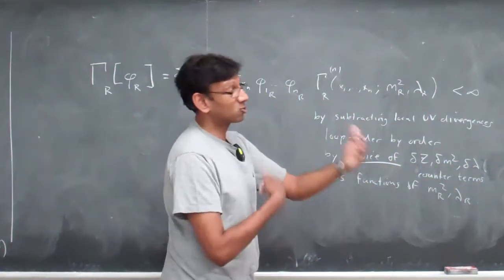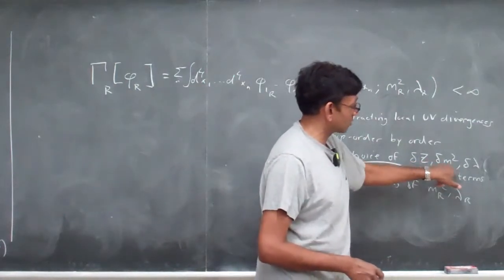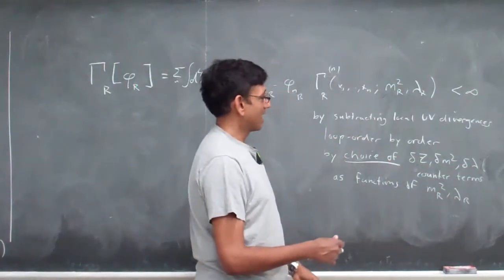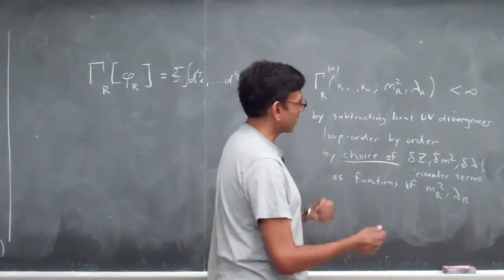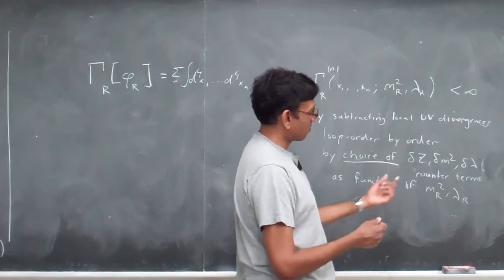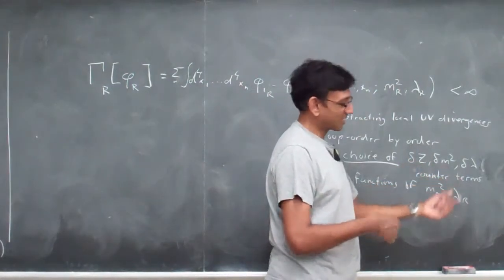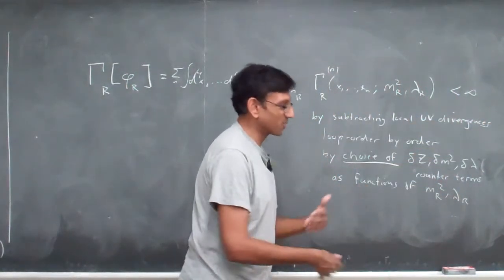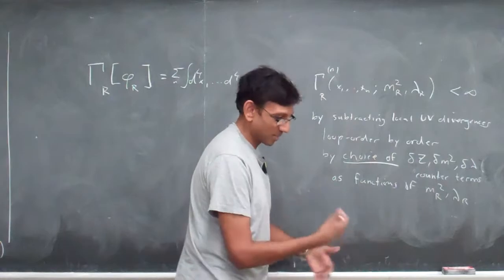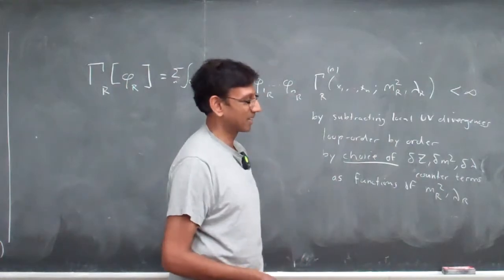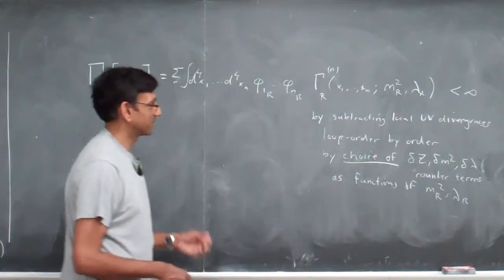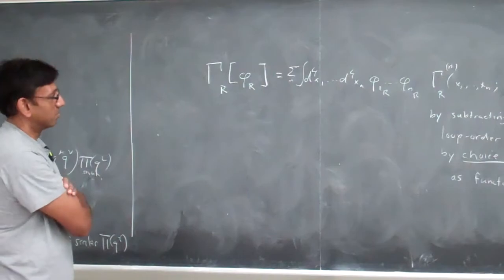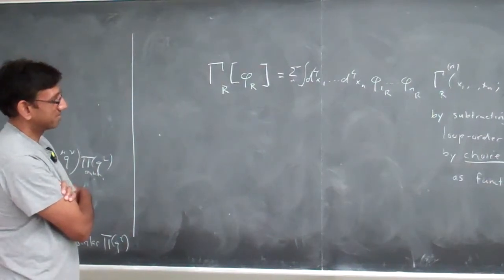At the next order in perturbation theory, even these counter terms will appear in loops, and then they'll introduce a modification of these counter terms at yet a higher order to cancel all the divergences that appear at any lower order. So this is the game that we're embarked on.